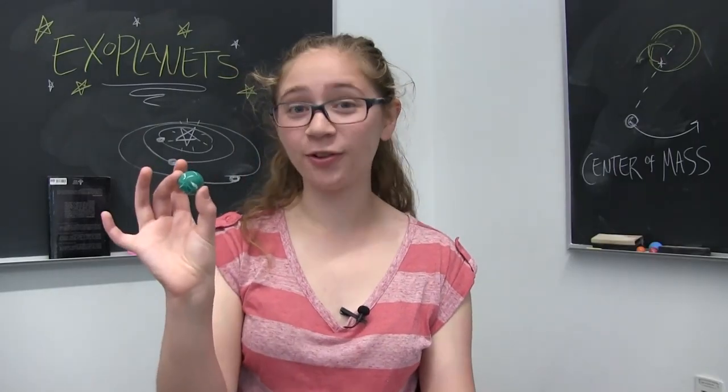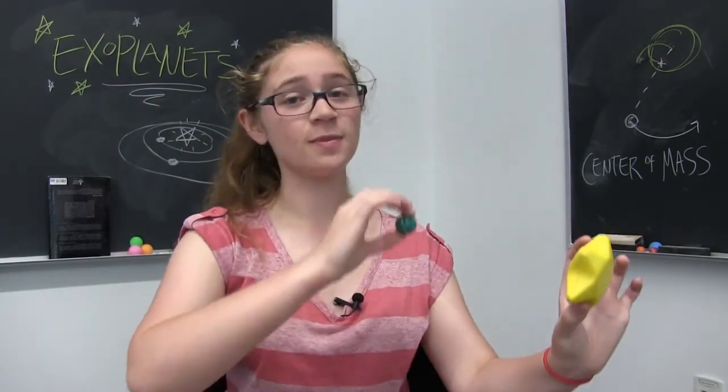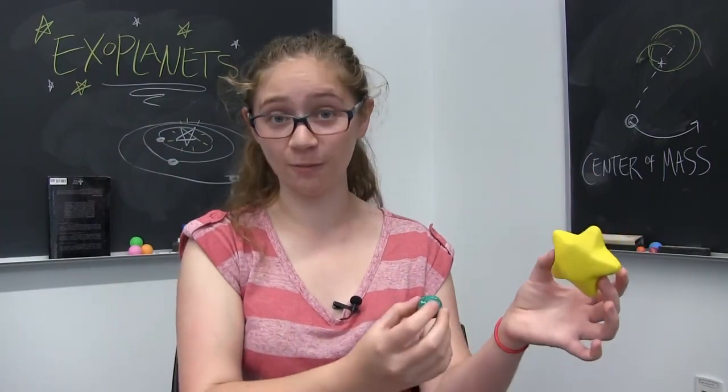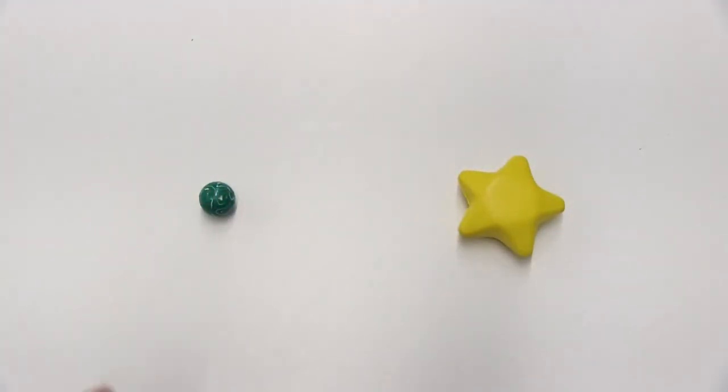And now consider a planet going around its star as a single system. The system is rotating in free space. No external forces, so it must be rotating about its center of mass. And where is the center of mass for the star-planet system? Well, the star is much heavier than the planet, so the center of mass will be much closer to the center of the star than the center of the planet.